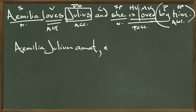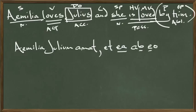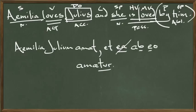Et ia ab ia amatur. We used 'ab' here, not 'a,' because the next word started with a vowel. We need 'by him': ab eo. Who is able to make the verb passive? You are — so amat becomes amatur. And truth is, we don't even really need the pronoun, because we know from amatur that it means 'she is loved by him.' So: Amelia Julium amat, et ab eo amatur.